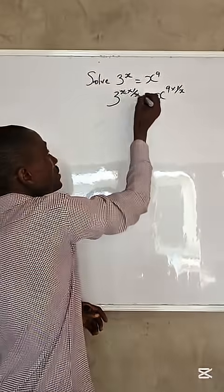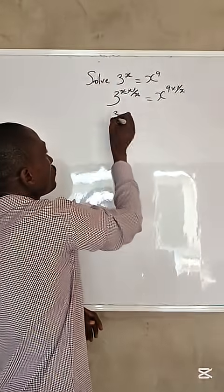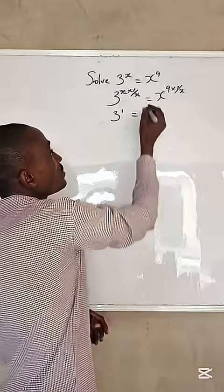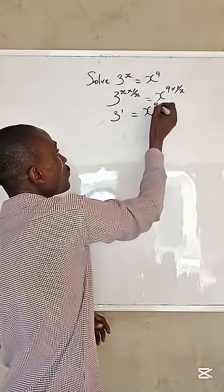From here, we cancel x. We are left with 3 raised to the power of 1 equals x raised to the power of 9 over x.